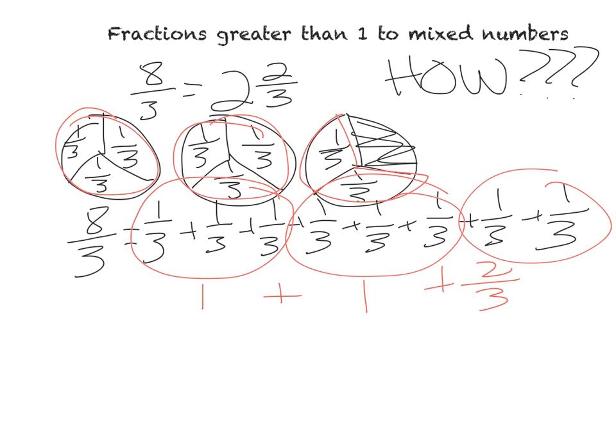Now, sometimes drawing it out is a reasonable way, and sometimes breaking it apart into these unit fractions and then grouping our whole numbers together is a pretty good way, too. Let's look at one more way that is commonly used. If I have eight-thirds and I want to figure out the mixed number, I can also use division. I can divide the numerator by the denominator. How many threes do I have in eight?